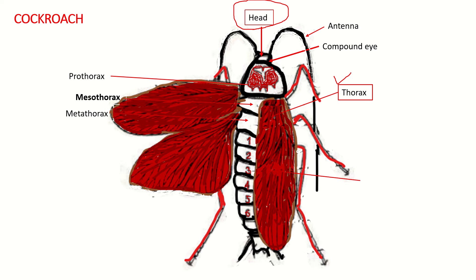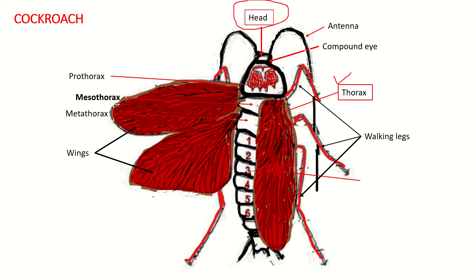Each thorax segment bears ventrally a pair of walking legs, while the mesothorax and metathorax also bear wings. So each of the mesothorax and metathorax has a pair of wings, and all three thoracic segments have jointed walking legs.